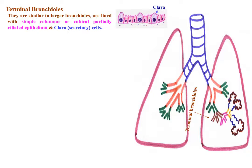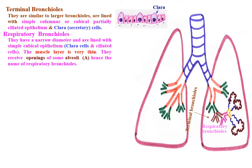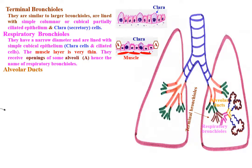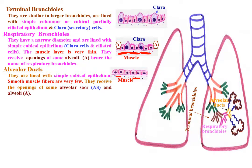Respiratory bronchioles have a small diameter and are lined with simple cuboidal epithelium, Clara cells, and ciliated cells. The muscle layer is very thin. They receive the openings of some alveoli, hence the name respiratory bronchioles. Alveolar ducts are lined with simple cuboidal epithelium, and smooth muscle fibers are very few. They receive the openings of some alveolar sacs and alveoli.